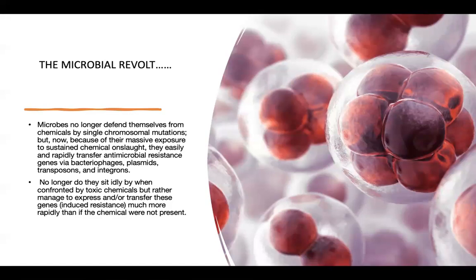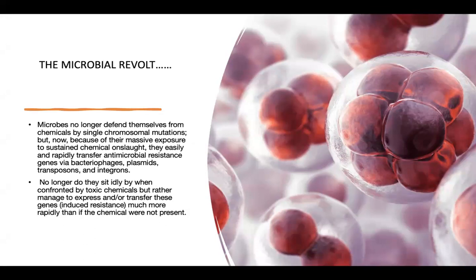Microbes no longer defend themselves from chemicals by single chromosomal mutations alone. Because of their massive exposure to sustained chemical onslaught, they are rapidly transferring antimicrobial resistant genes via bacteriophages, plasmids, transposons, and integrins. They are transferring resistant genes from one type of bacteria to another to resist this chemical onslaught from unwarranted and promiscuous use of antibiotics. Rather than sitting idly by when confronted by these toxic chemicals, they express or transfer these genes — inducing resistance — which now happens much more rapidly than natural selection.